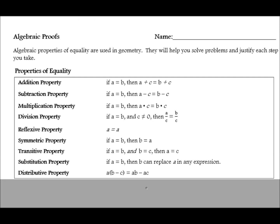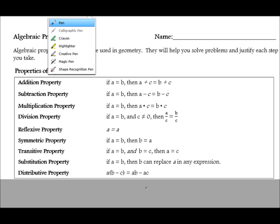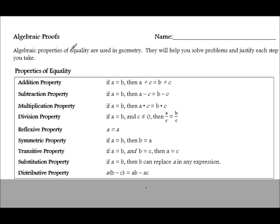Algebraic proofs are a formal way of putting your steps for an algebraic equation in order. The properties of equality are your algebraic properties that you've learned last year, but we're going to review them now. And then we're going to set up formal proofs for solving an equation.